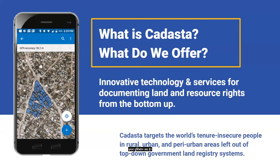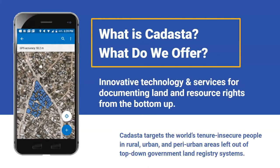What is our approach? CADASTA uses innovative technology, services, and advocacy to advance global land and resource rights. We target the world's tenured insecure people in rural, urban, and peri-urban areas left out of top-down government land registry systems. Recognizing that every partner is unique, our tools and services can accommodate a wide range of technical capabilities and resources and can be applied to a variety of different sectors.